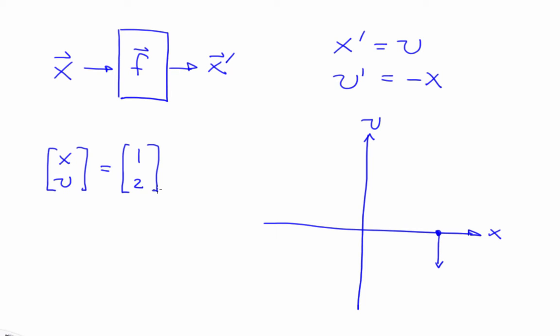then x dot, which is the slope in the x direction, the side-to-side slope in my picture, is two, and v dot, the slope in the v direction, the up and down direction in my picture, is minus one.